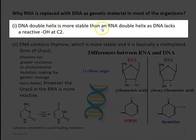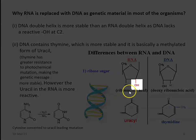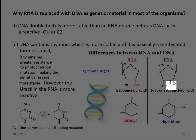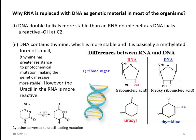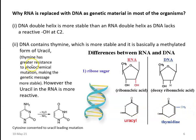The DNA double helix is more stable than an RNA double helix because DNA lacks a reactive OH group at the second carbon position. In RNA, there is a reactive OH group which makes the molecule less stable. In the DNA molecule, the second carbon position has only a hydrogen, making the molecule more stable. The second reason is that DNA contains thymine, which is more stable — it is basically a methylated form of uracil. Thymine has a greater resistance to photochemical mutation, making the genetic message more stable. Uracil is present in RNA, whereas it is replaced with thymine in DNA.